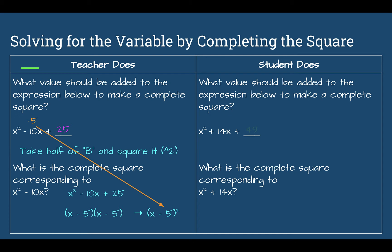Let's check. The value added is 49. Half of 14 is 7, and 7 times 7 is 49, so you would add 49 to make a complete square. The complete square corresponding to x squared plus 14x is x plus 7 to the second power. We take the trinomial with plus 49, factor it, and get x plus 7 times x plus 7, so x plus 7 to the second power. Notice that the half of b value is what appears inside the parentheses.